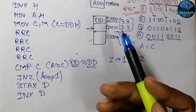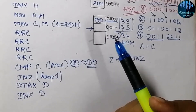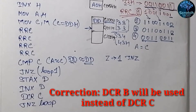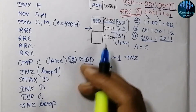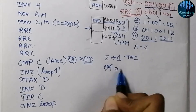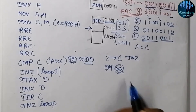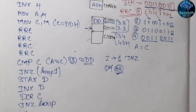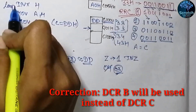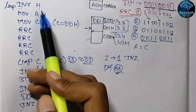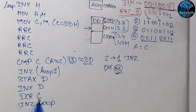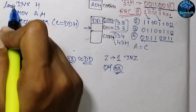Before moving to the next element, we decrement register B using DCR B to reduce the element count. Then we use JNZ Loop2 — if B is not zero, we jump back to INX H to process the next element. This loop continues until B reaches zero, at which point we fall through to HLT.